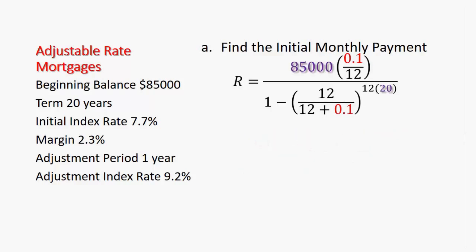We're replacing P, the principal, with 85,000, and T, the time, with 20 years. Now's the hard part, plugging this into your calculator. So I'm going to do this using the calculator on my computer.